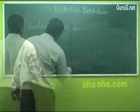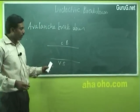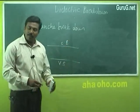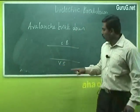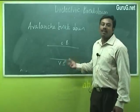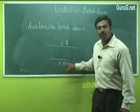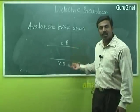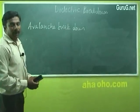In avalanche breakdown, when the field is further increased beyond the intrinsic level, some electrons diffuse and break the covalent bonds in the valence band, creating more free electrons (secondary electrons). These secondary electrons, with further field increase, move from the valence band to the conduction band, creating a cascade of electrons jumping across the band gap. This type of breakdown is called avalanche breakdown.